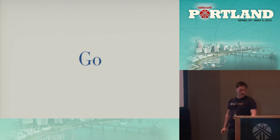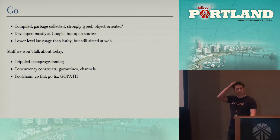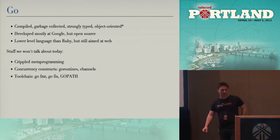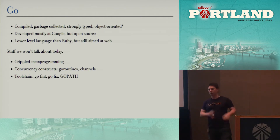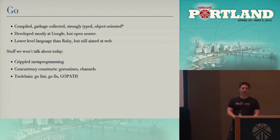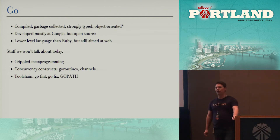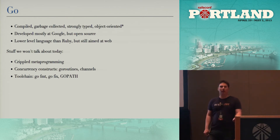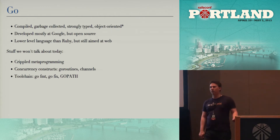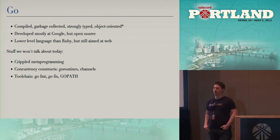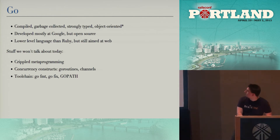What is Go? Go is a new programming language. It's compiled, garbage collected, strongly typed, and object-oriented — with a little asterisk on the object-orientedness. It was developed mostly by Google over the last five or six years, and it's actually extremely young. The V1 spec has only been frozen for about 18 months, and they just put out 1.1 about two weeks ago.